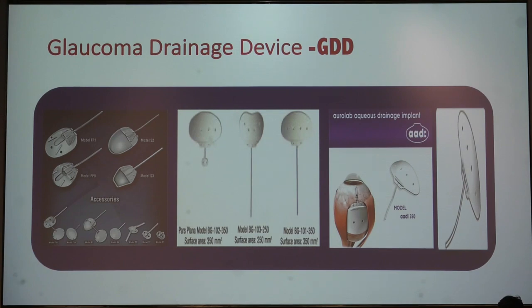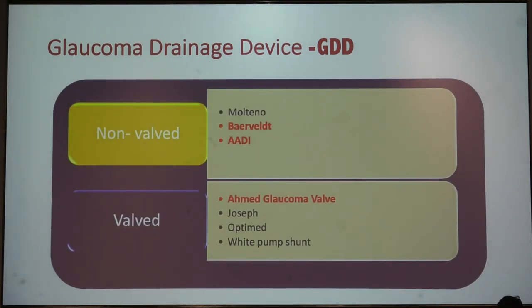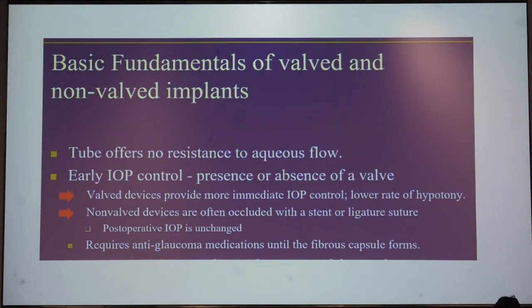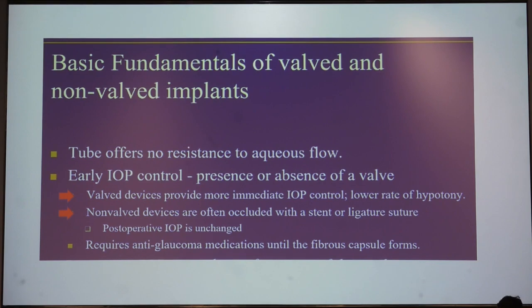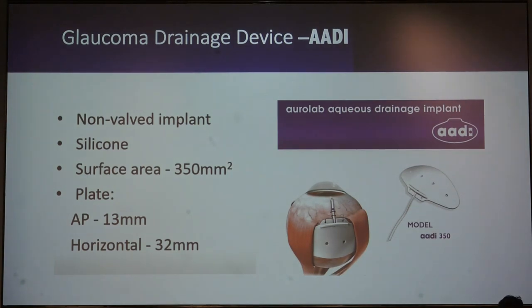These are the various drainage devices available. The most commonly used non-valve devices are Baerveldt and Molteno, while the valve device is the Ahmed Glaucoma Valve. The key difference: valve devices provide more immediate IOP control with a low chance of hypotony because the mechanism is active, whereas non-valve devices are usually occluded with either a suture or stent, so immediate IOP control is not achieved. Anti-glaucoma medication is needed until the suture lyses or the stent is removed.